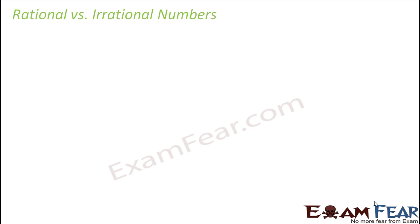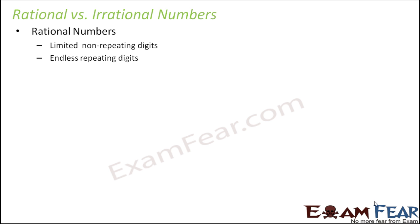Sometimes that might lead you to think that all numbers that exist on this earth are rational numbers. But that's not the case. Had that been the case, then why would we have introduced something called rational numbers? There are numbers which are not rational, and they are called irrational numbers. Let us see how they are different from each other.